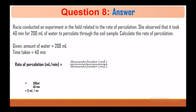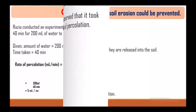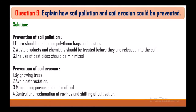Question 8: Razia conducted an experiment related to the rate of percolation. She observed that it took 40 minutes for 200 milliliters of water to percolate through the soil sample. Calculate the rate of percolation. Given: amount of water = 200 ml, time taken = 40 minutes. Rate of percolation = 200 ml ÷ 40 minutes = 5 milliliters per minute.